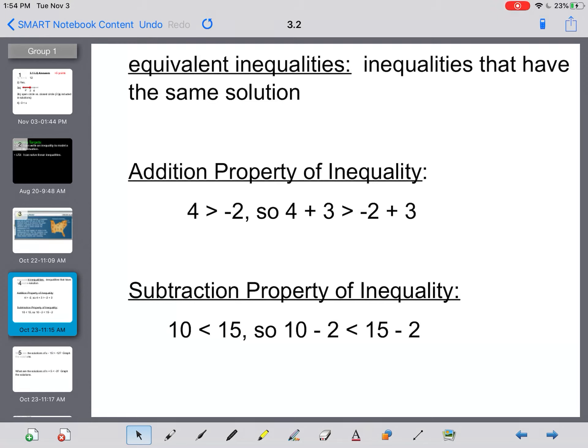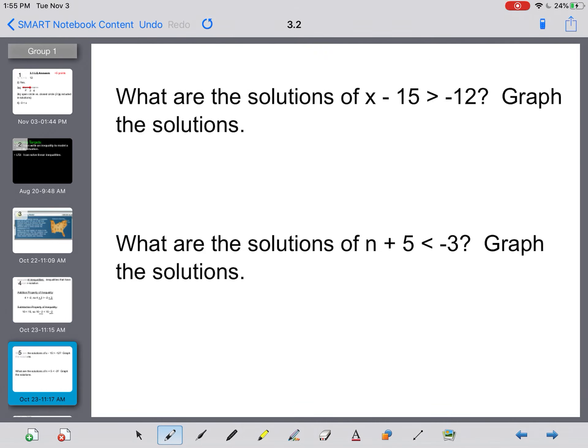Alright, so vocab for today are equivalent inequalities, which means inequalities that have the same solution. The addition property of inequalities just states that if I add the same thing to both sides, the inequality is still going to be true. And the subtraction property of inequality says if I subtract the same thing from both sides, the inequality will still be true also.